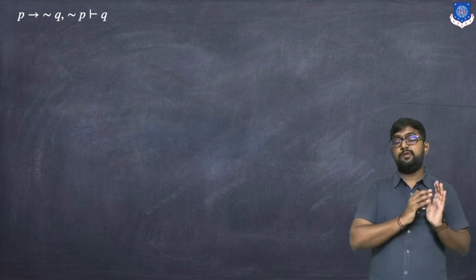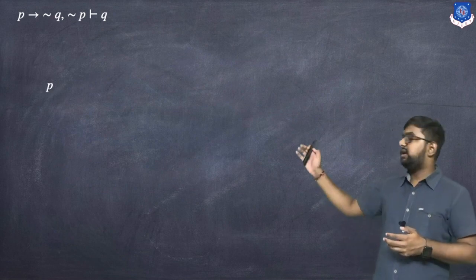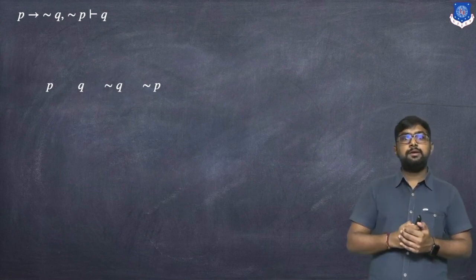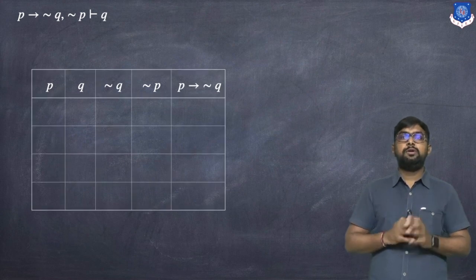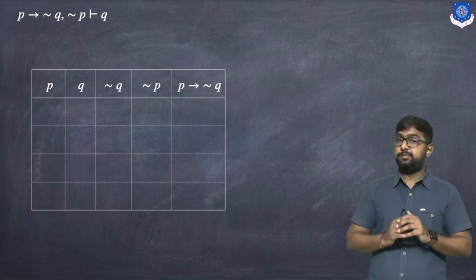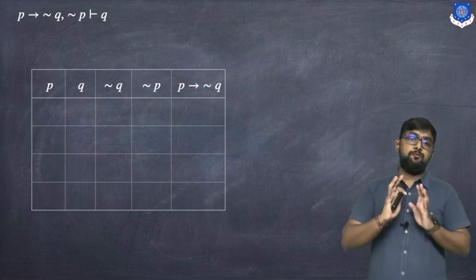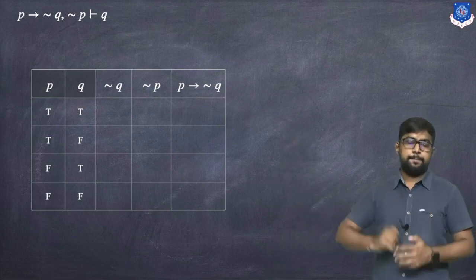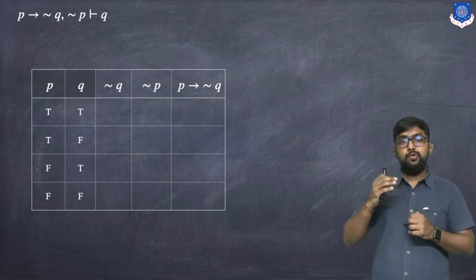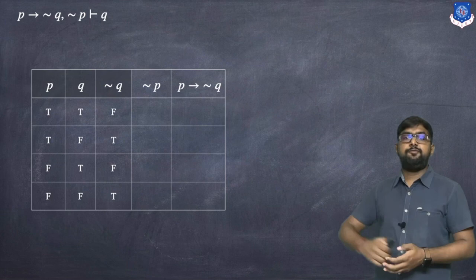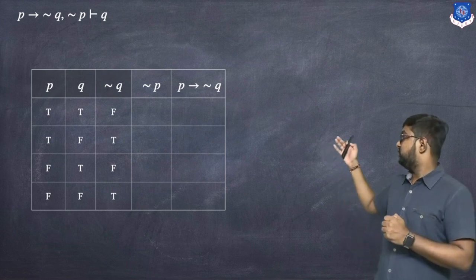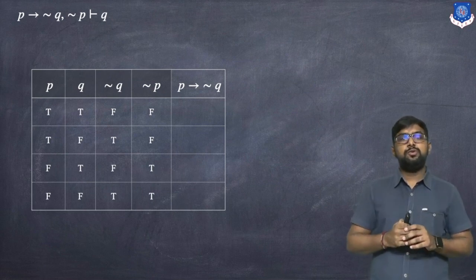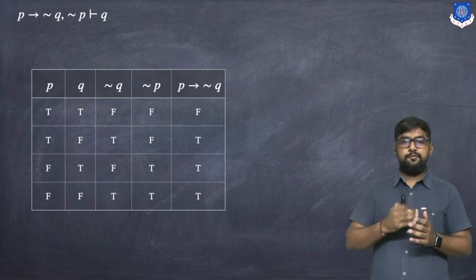In this example we use the definition directly rather than the tautology theorem. We construct a truth table with columns: p, q, ¬q, ¬p, and (p → ¬q). With two variables there are four rows: TT, TF, FT, FF. Not q gives: F, T, F, T. P → ¬q gives: F, T, T, T.